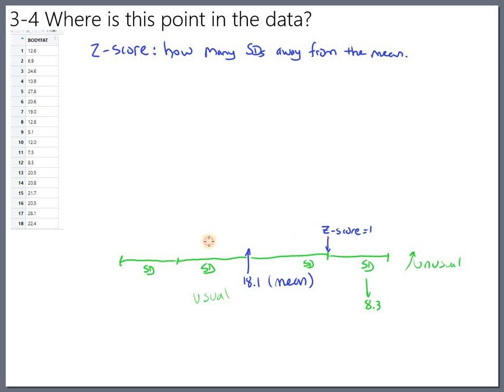And someone that was right here, about half a standard deviation below the mean, would have a z-score of negative 0.5, to say they're half a standard deviation below the mean.